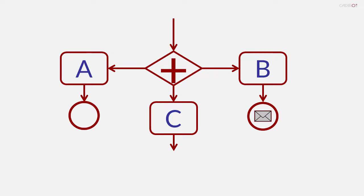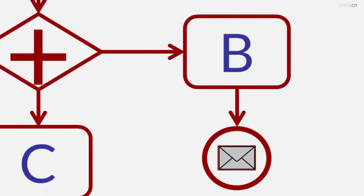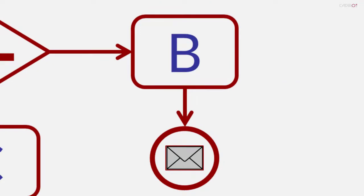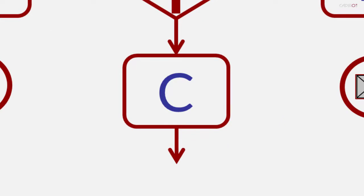In this scenario, the sequence flow out of A will simply stop. The sequence flow from B will stop with a result, a message being sent. The sequence flow out of C will continue.